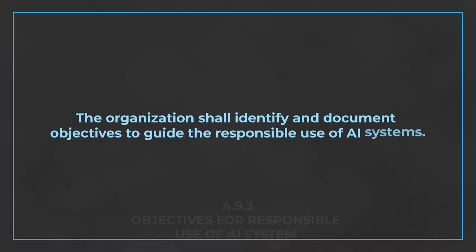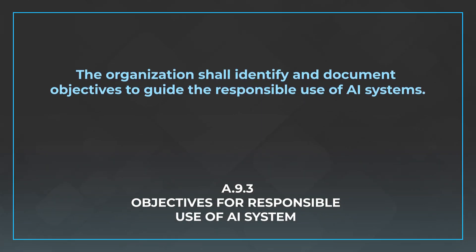The next control is A.9.3, objectives for responsible use of AI systems. This control is really about identifying those objectives. You can look back at Clause 6.2 and think about the objectives set there. The goal is to make sure you are measuring and ensuring that your AI systems have those objectives in place and the right people know about them to guide the use of your systems. The control says the organization shall identify and document objectives to guide the responsible use of AI systems. This may also look like terms of use for your end users — think about ChatGPT, which asks you not to submit violent prompts or inappropriate content.